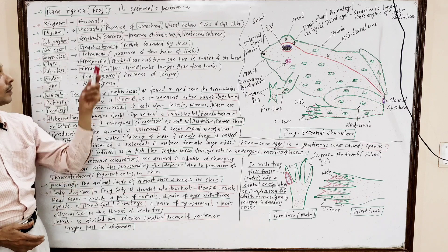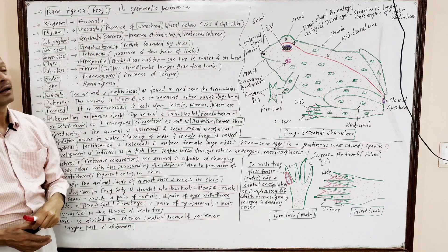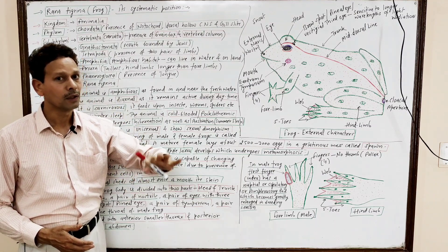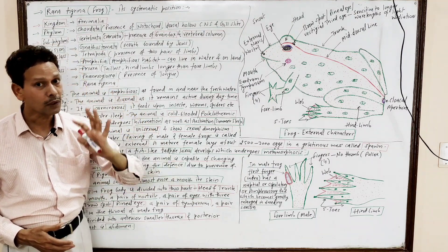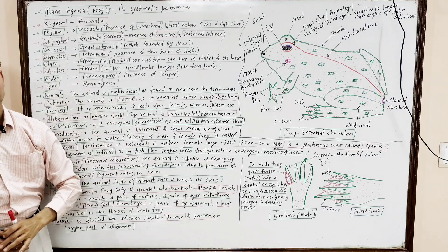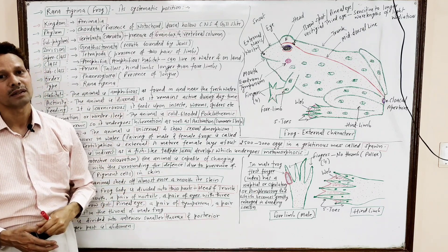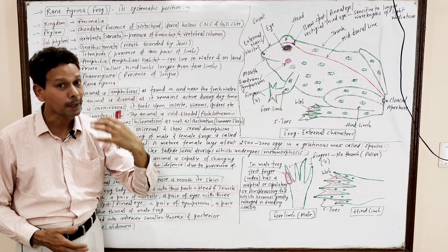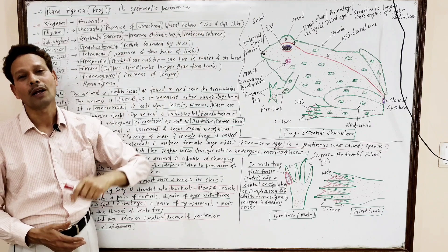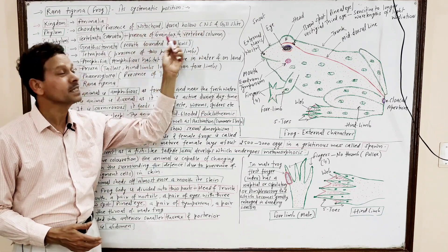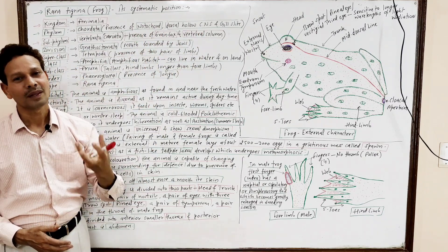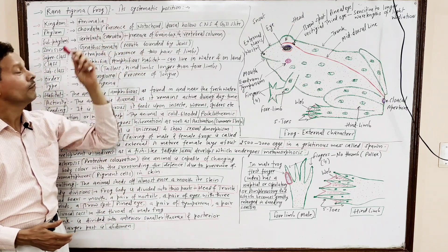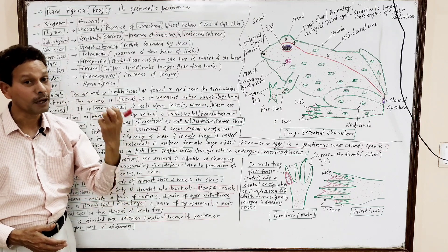Subphylum: Vertebrata, or Craniata. This means the dorsal hollow notochord, which develops in embryonic and larval stages, is replaced by a vertebral column. The brain is enclosed in a brain box — a cranium. That is why the subphylum is Craniata.